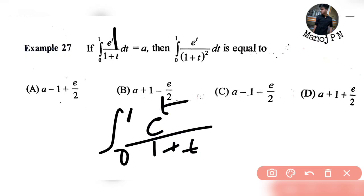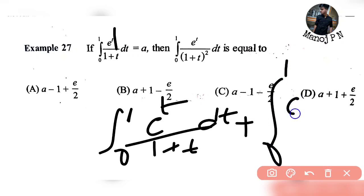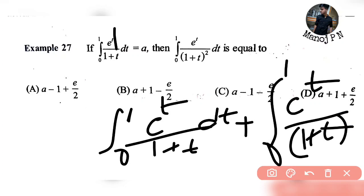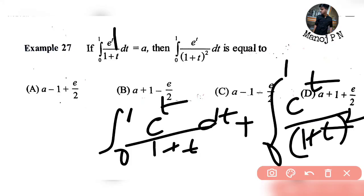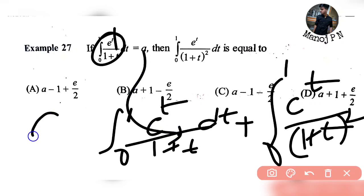That is, into dt. Plus, the integration from 0 to 1 of eᵗ divided by (1 + t)² dt. This term is very useful. You replace a plus theta in this term.